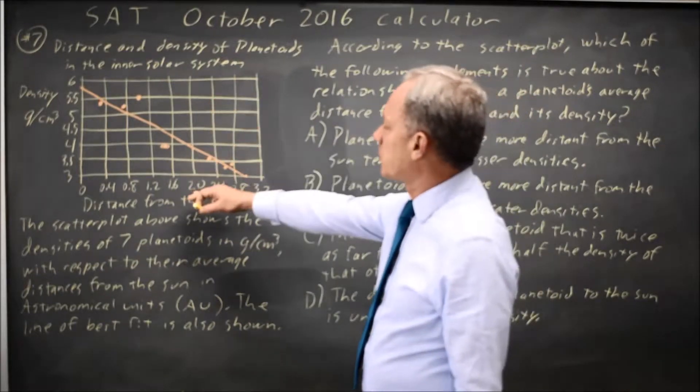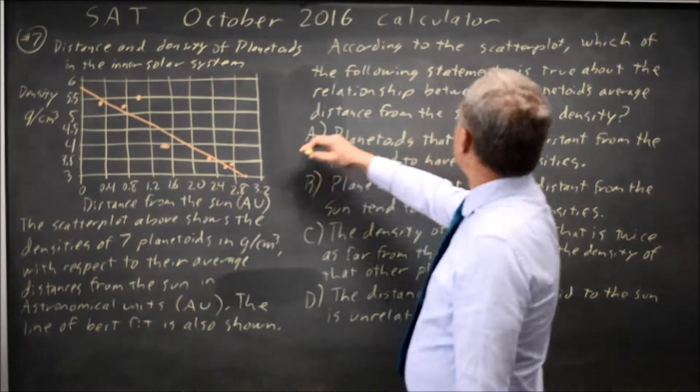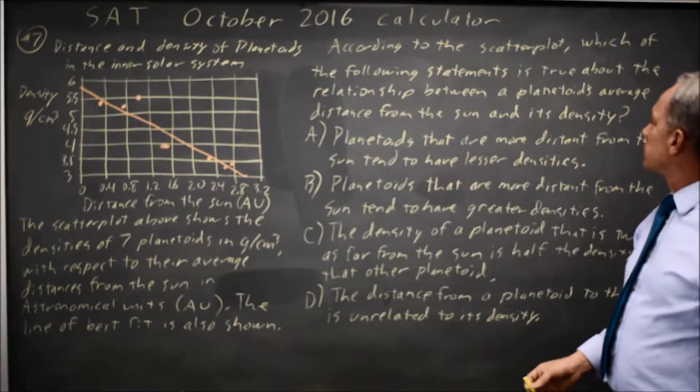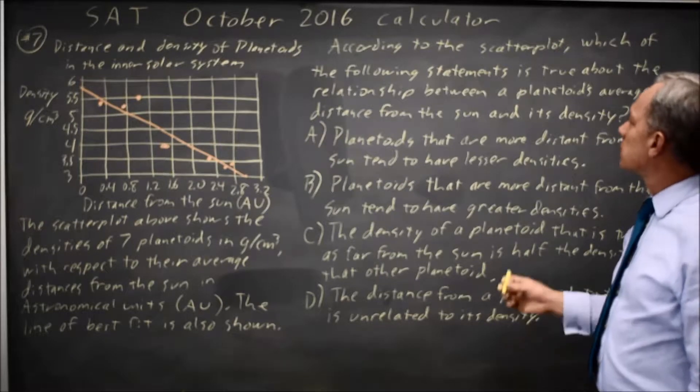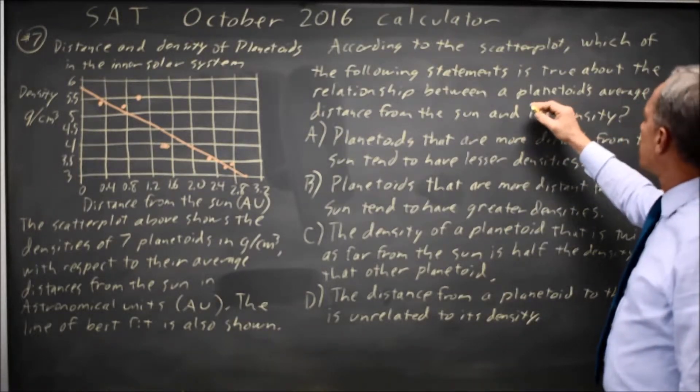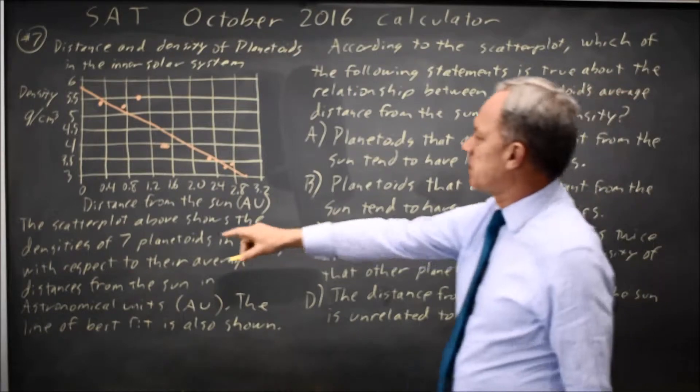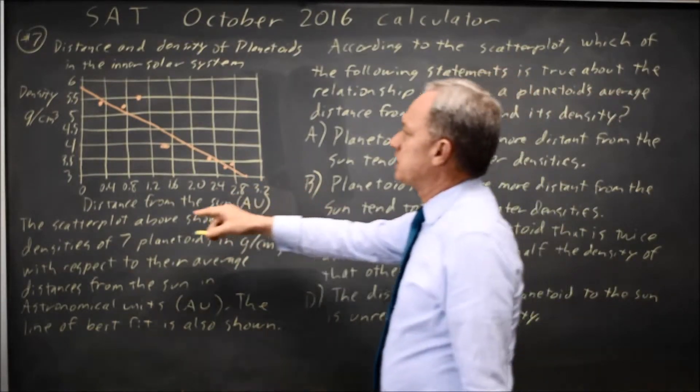College Board gives us a scatter plot with a line of best fit, and then they ask, based on this relationship, what is the relationship between a planetoid's average distance from the sun, that's the horizontal axis, and its density, which is the vertical axis.